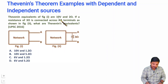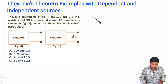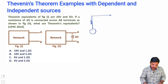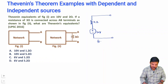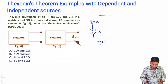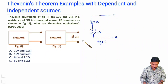Thevenin's equivalent of Figure 1 is 10 volts and 2 ohms. When you draw the Thevenin's equivalent circuit, you should know that it shows a series connection of the Thevenin's equivalent resistance with the Thevenin's equivalent voltage. That is the Thevenin's equivalent circuit — 10 volts and 2 ohms are given. Now, we are connecting a 3-ohm resistor between terminals A and B as shown in Figure 2.